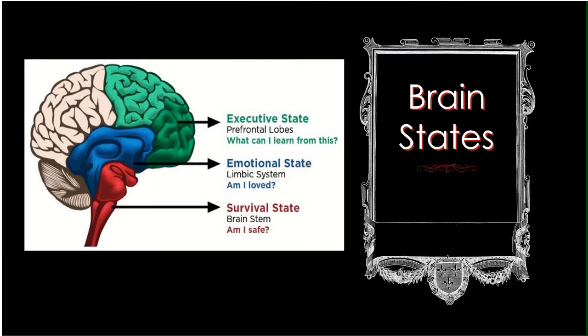There are three brain states. The survival state is way in the back — that's our lowest brain state, the first one that we have. The second one is our emotional state, so this is a little better, we're climbing up a little bit. And then there's our executive state, right in the prefrontal lobes. That's exactly where we need to be to learn new things or to even access the skills that we've been given.